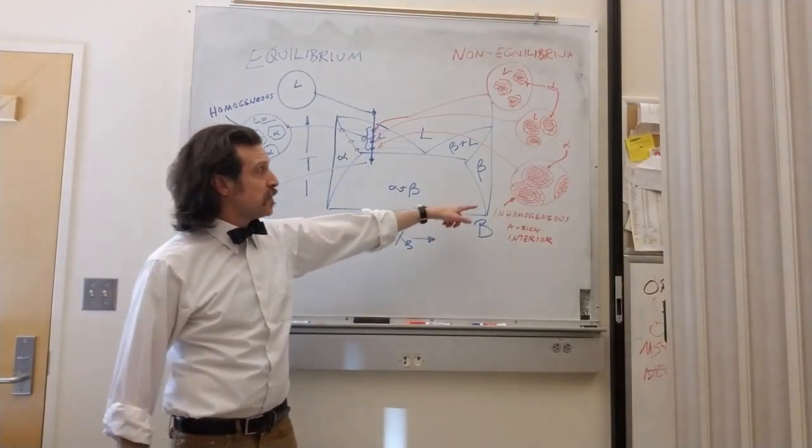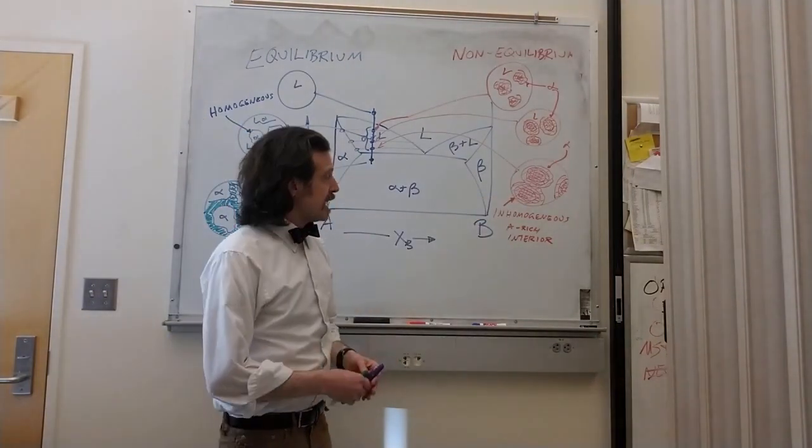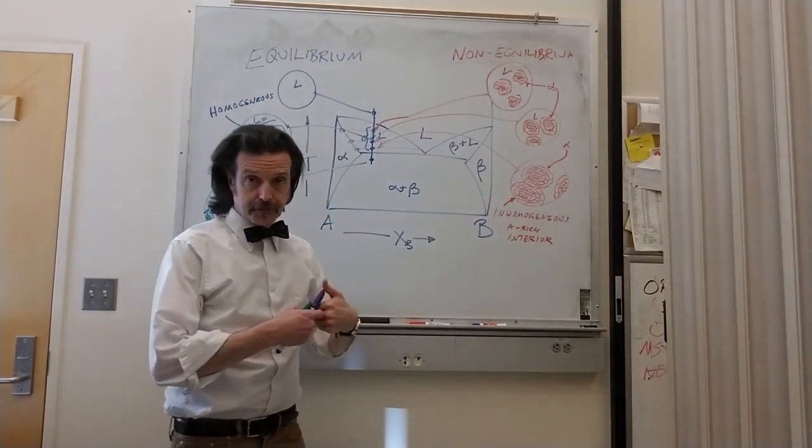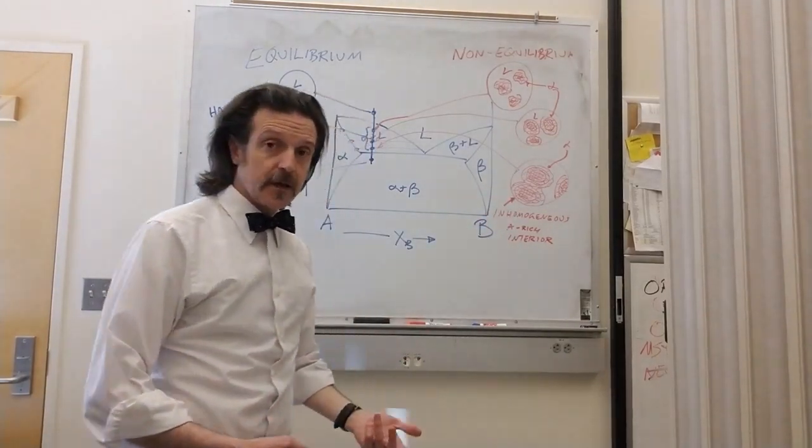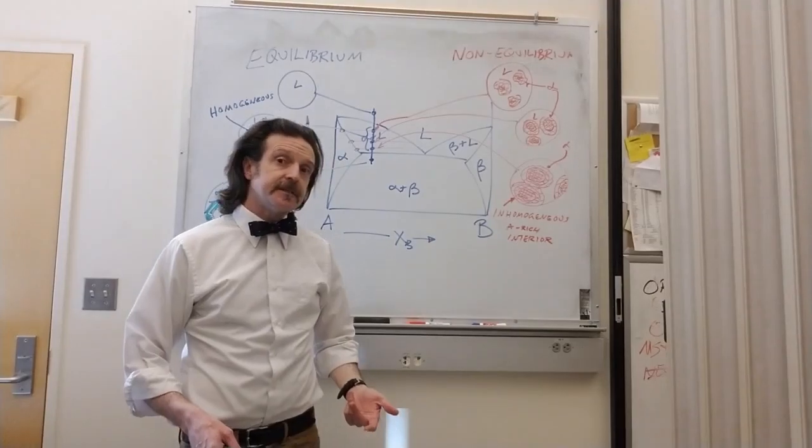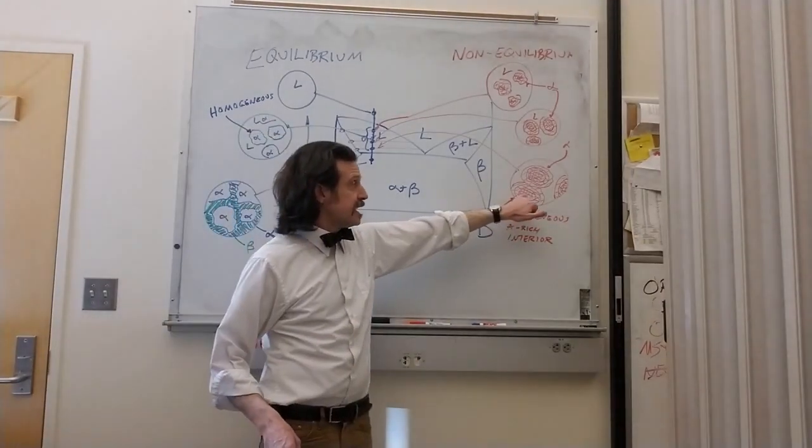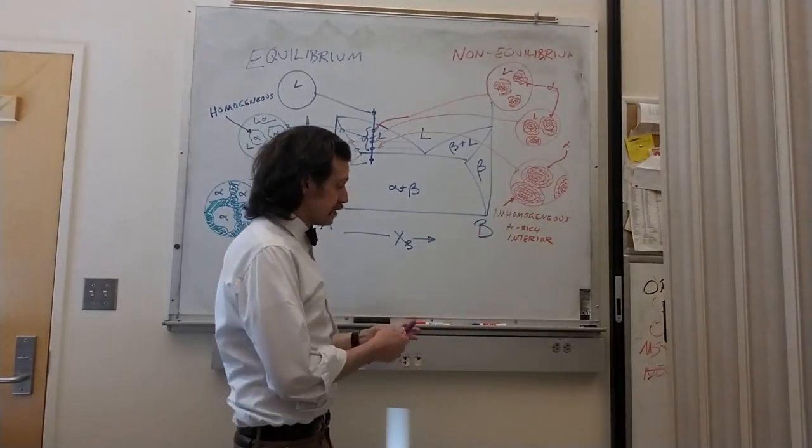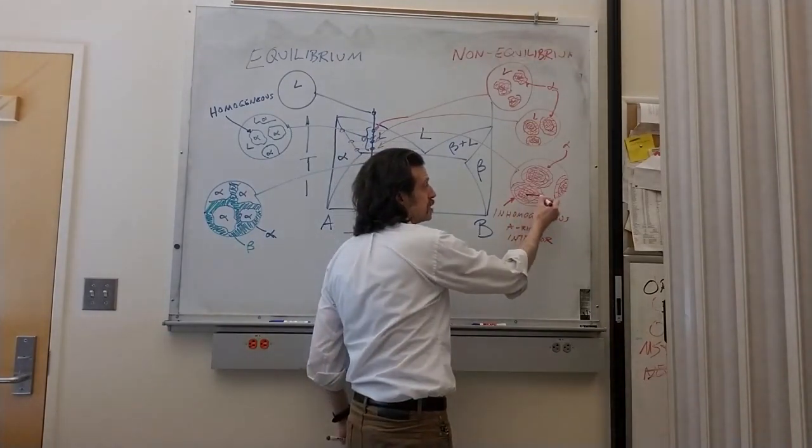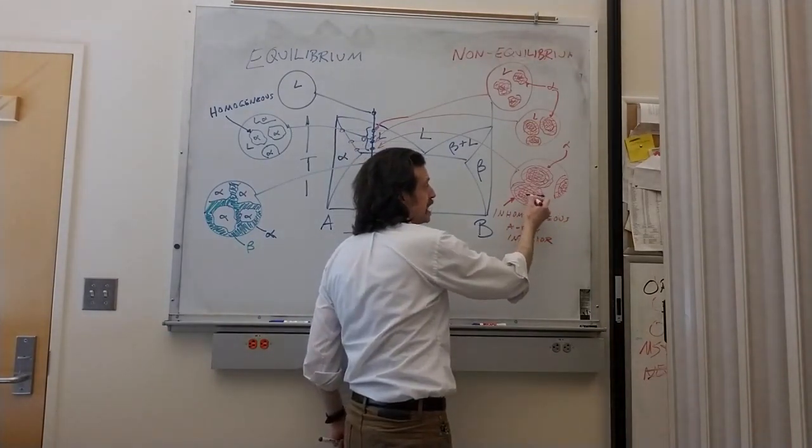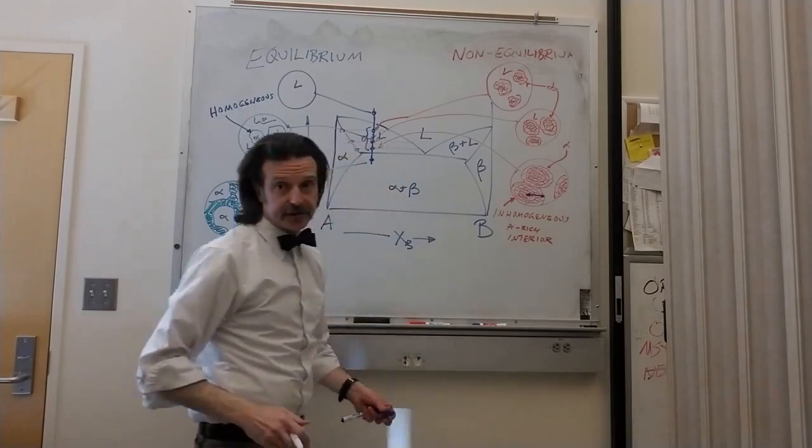As a result, we wind up with a crystallite that's precipitating out of the liquid, which is not homogeneous. It has a gradient from the interior to the exterior that changes.